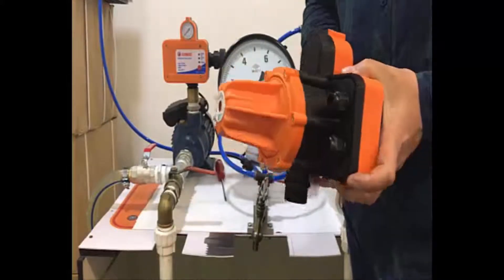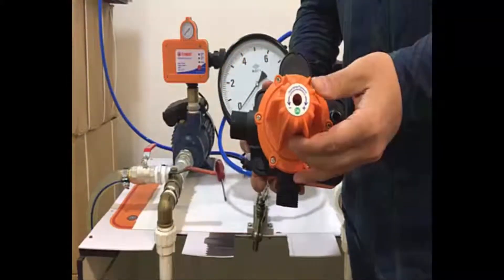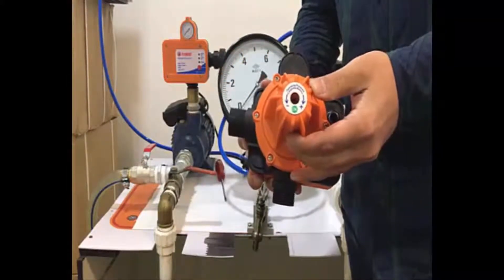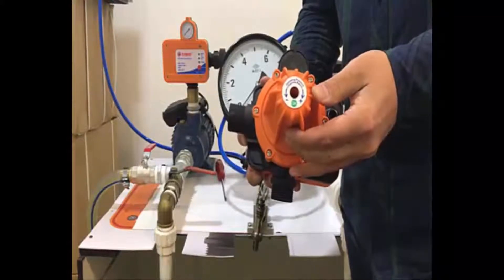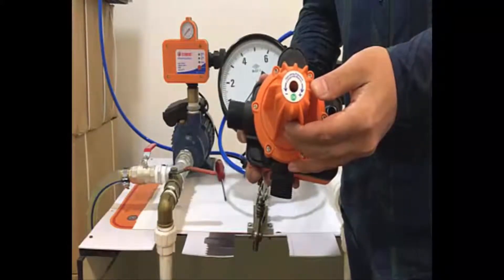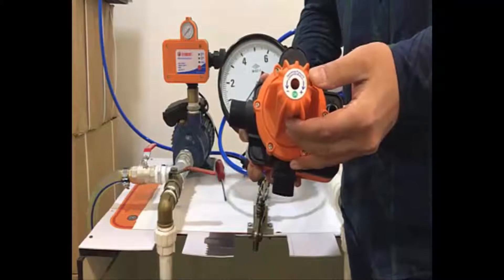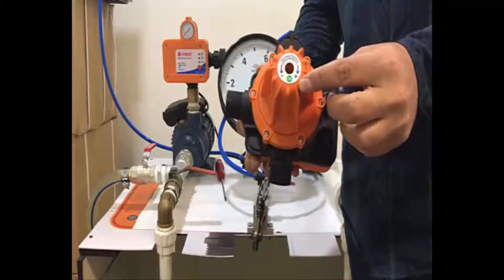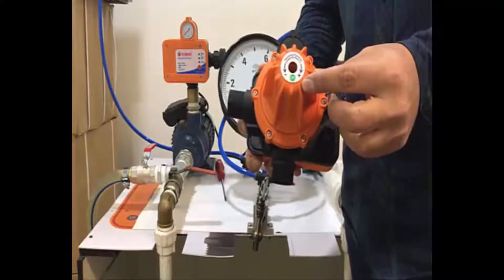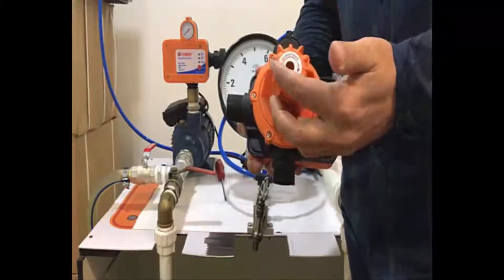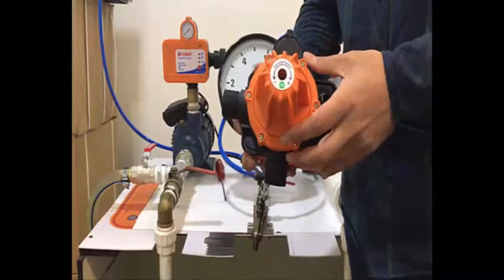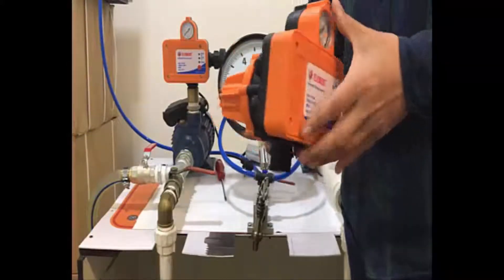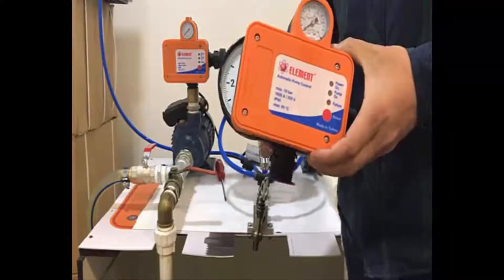As you can see, there is an adjusting screw at the back side of the device. The pressure level of the restart can be increased by screwing the screw clockwise to the direction of the plus sign, and can be decreased by unscrewing it counterclockwise to the direction of the minus sign. Now, let's see how our device will be set for the first installation.